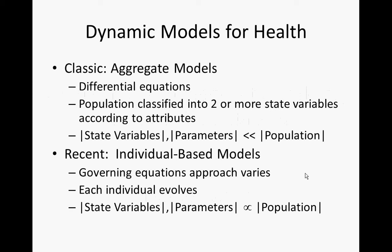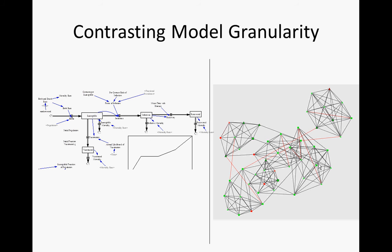By contrast, individual-based models, when dealing with models of human populations, often have state variables and parameters proportional to the model's size. As we've learned, we'll often build multi-scale models where agents are not limited to individuals — they may represent schools, neighborhoods, or cities. Even in that case, individual-based models tend to have a lot more moving parts, a lot more state that has to be stored.